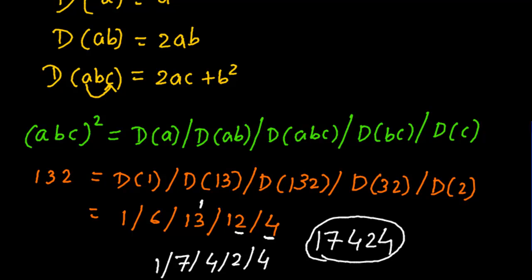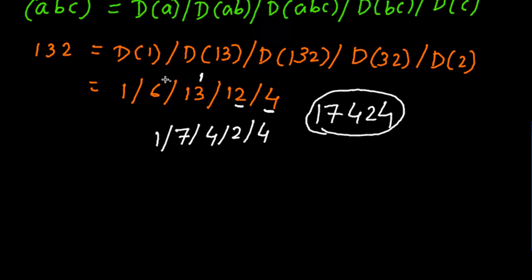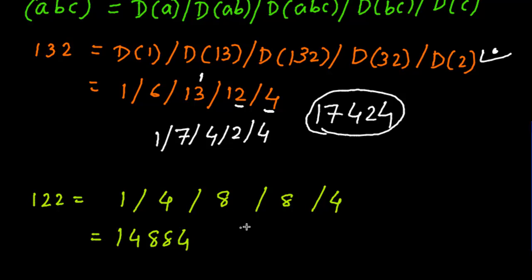So 17424 is the answer for the square of 132. You don't need to write all those intermediate steps — this is just for explanation. You can move directly to the calculation step. For example, for 122: create five spaces, then compute 1²=1, duplex of 12 = 4, duplex of 122 = 2×1×2 + 4 = 8, duplex of 22 = 8, square of 2 = 4. The answer is 14884.